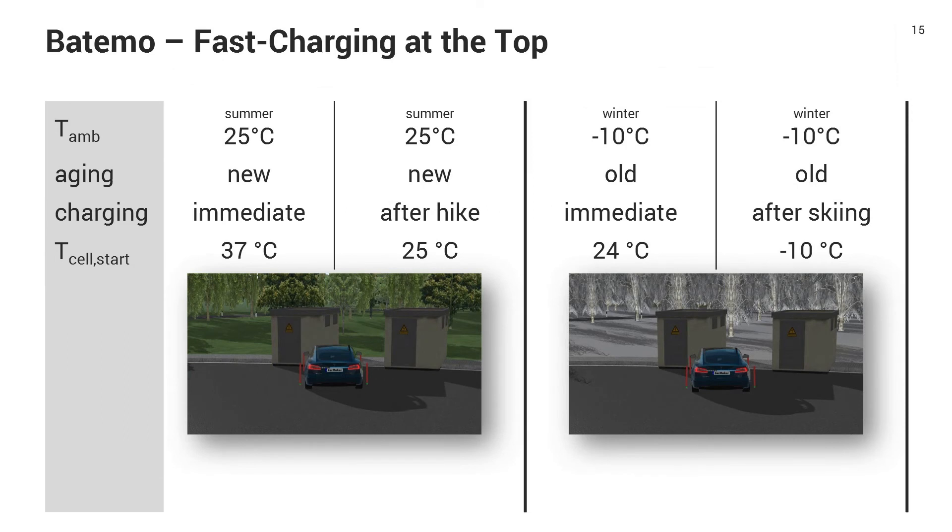So at the end, we are uphill and we now know the precise state the battery is in after we are uphill. And at the top of the pass, we want now to fast charge. And again, I want to compare four different scenarios. In the summer, I always use the new aging state. And the first I want to immediately charge after I arrive at the top. And then the alternative is I want to go on a hike, enjoy the Alps there and then charge after the hike. And the difference is the cell temperature at the beginning of my charge. If I charge immediately, I have about 37 degrees C because the pack is heated up from driving up. If I wait after the hike, my pack is cooled down again to 25 degrees C.